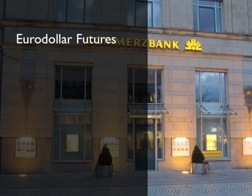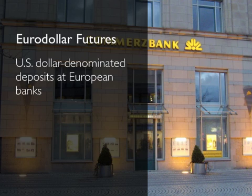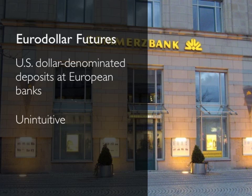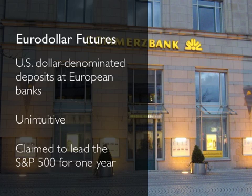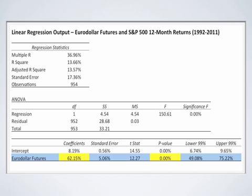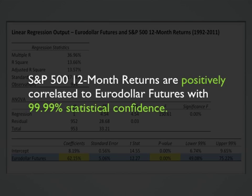In the second example, we're going to look at Eurodollar futures. Don't get confused here — the term has nothing to do with the exchange rate between the euro and the dollar. It actually refers to dollar-denominated deposits at European banks, and it is something that existed before the creation of the euro currency. This is a very unintuitive indicator, and in fact we know only of one person — one of our independent research providers — who looks at it, and he claims that Eurodollar futures tend to lead the S&P 500 by about one year. Once again, we skip the intermediate steps of the analysis and go straight to the results, to find out that Eurodollar futures do in fact lead the S&P 500 by about one year, with a very high level of statistical significance. This is a great example of a data point that you wouldn't even bother looking at if you didn't have quantitative analysis tell you that this is in fact a great indicator for the S&P 500.